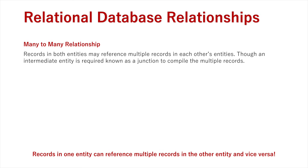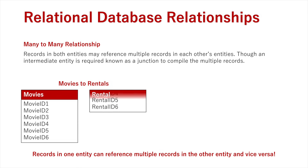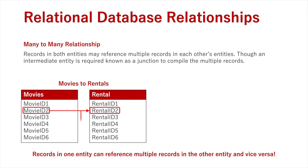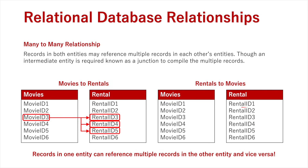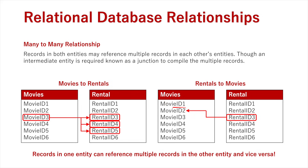In a many-to-many relationship, both entities can reference multiple records in the other. Movie id2 might appear in rental id2 and rental id6, and movie id3 might appear in rental id3, rental id4, and rental id5. Going the other way, rental id2 might have involved movie id2 and movie id3, and rental id3 could reference movie id2, movie id3, movie id4, and movie id5 — both entities referencing multiple records in the other, establishing the many-to-many relationship.